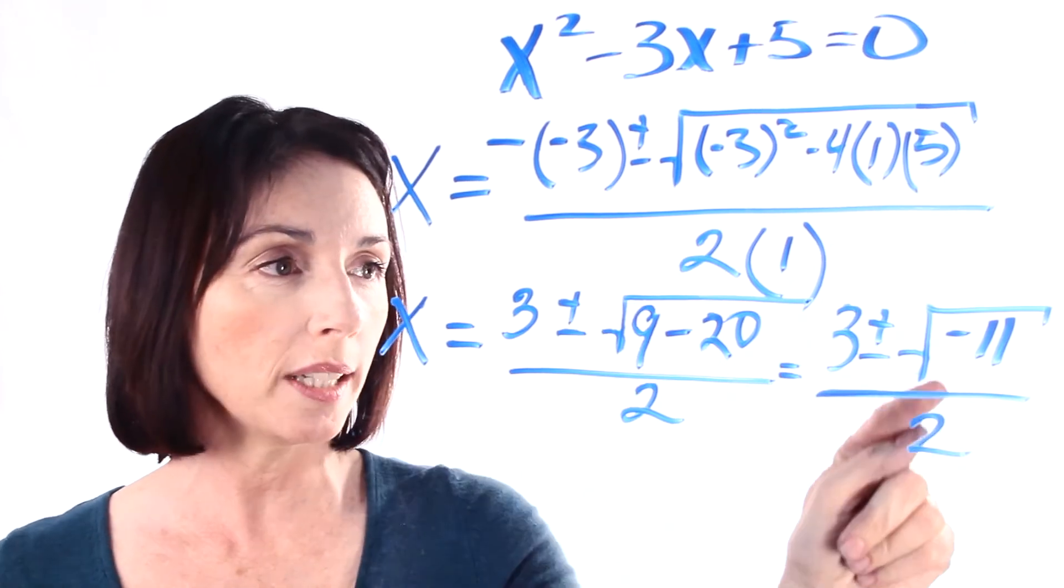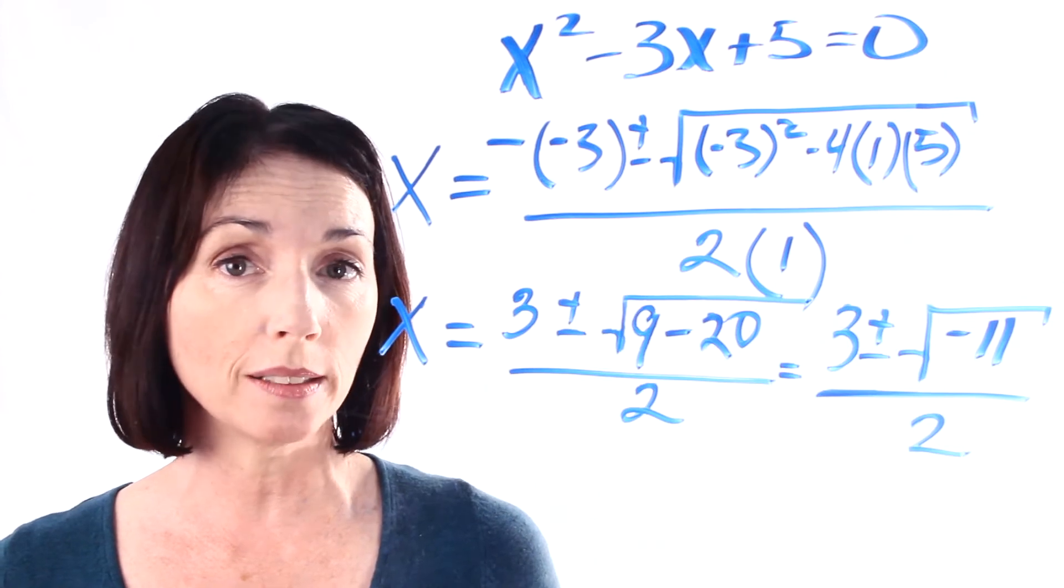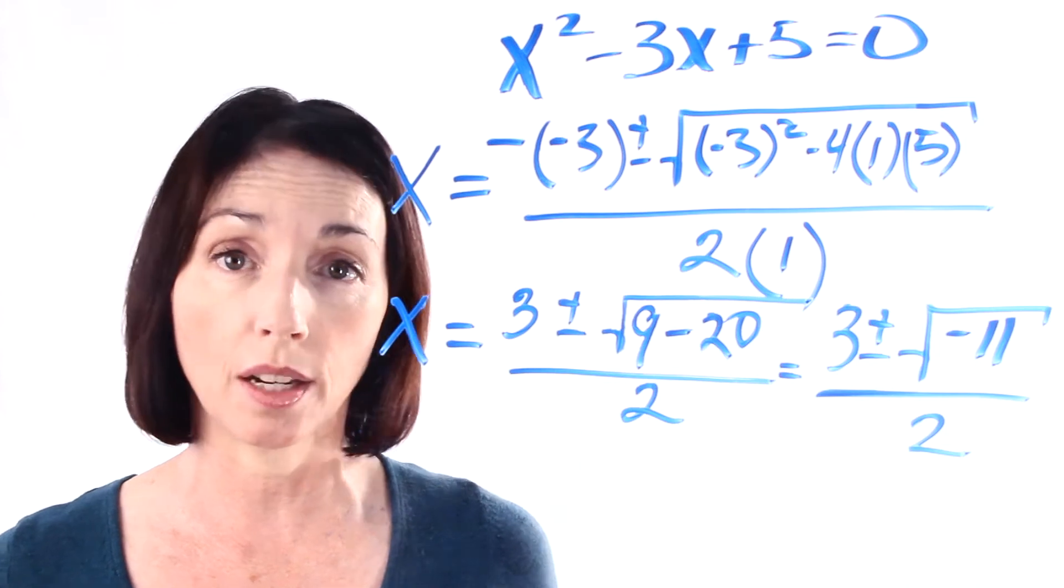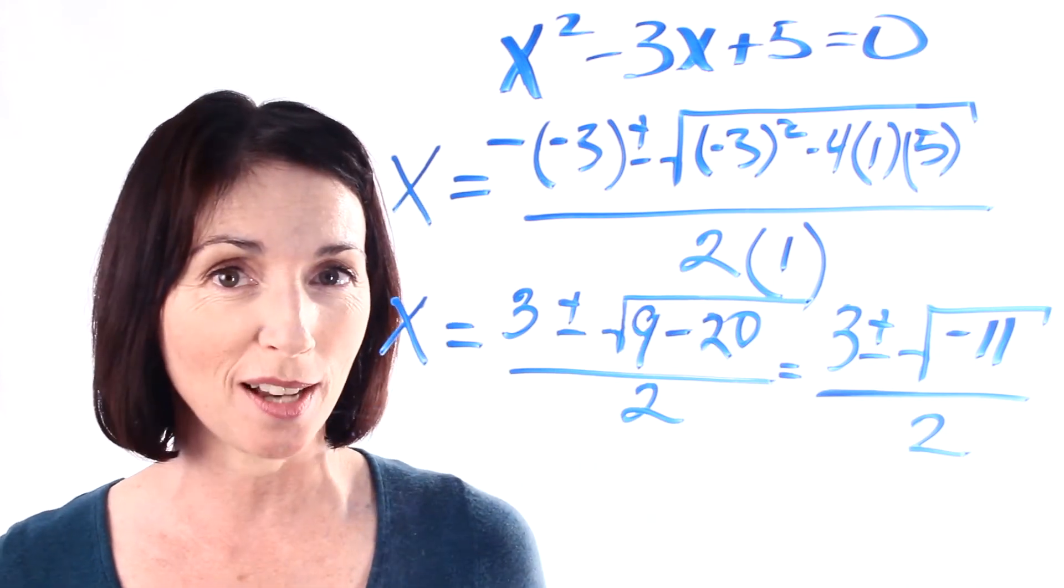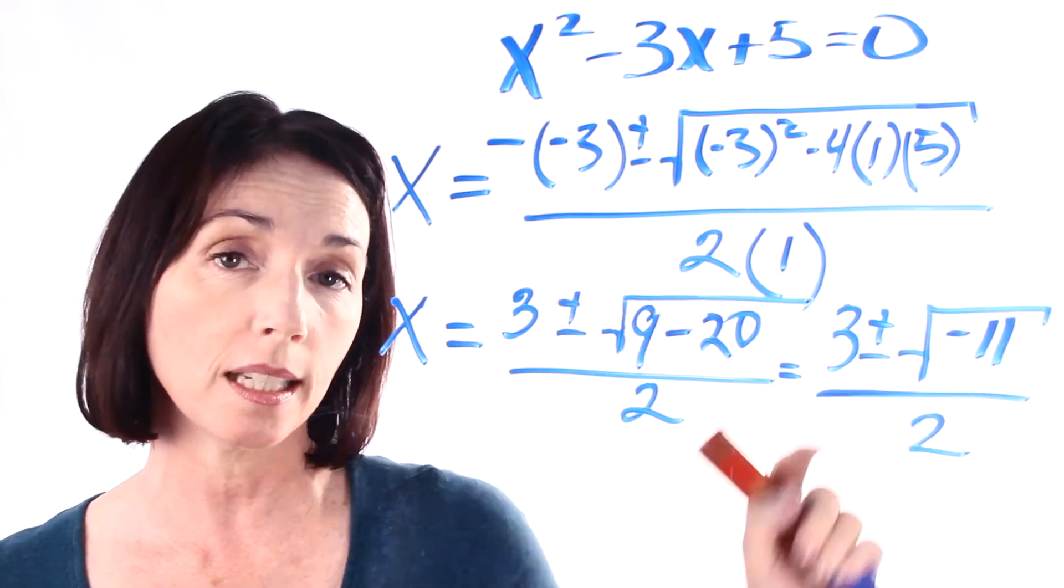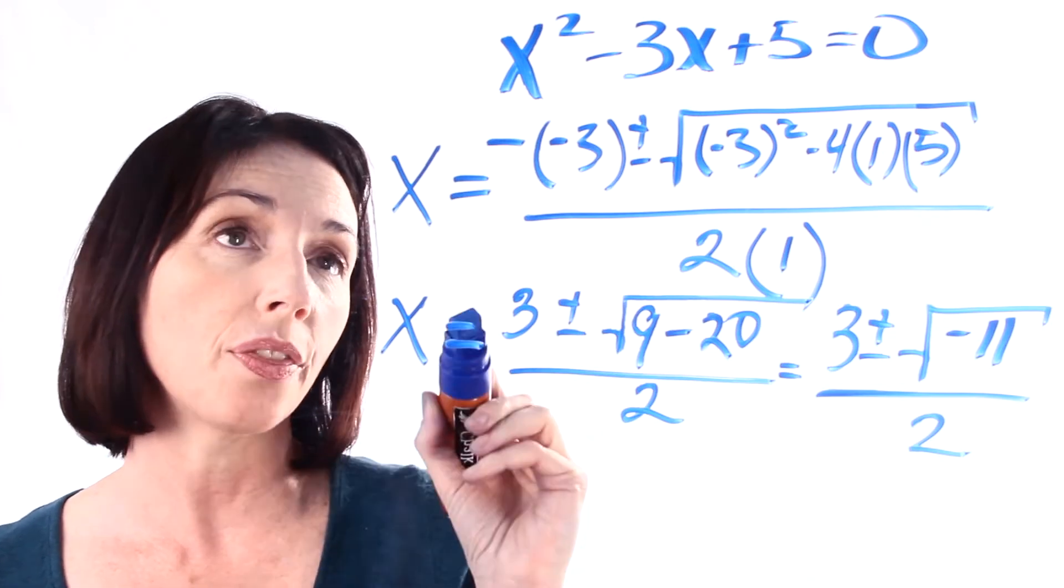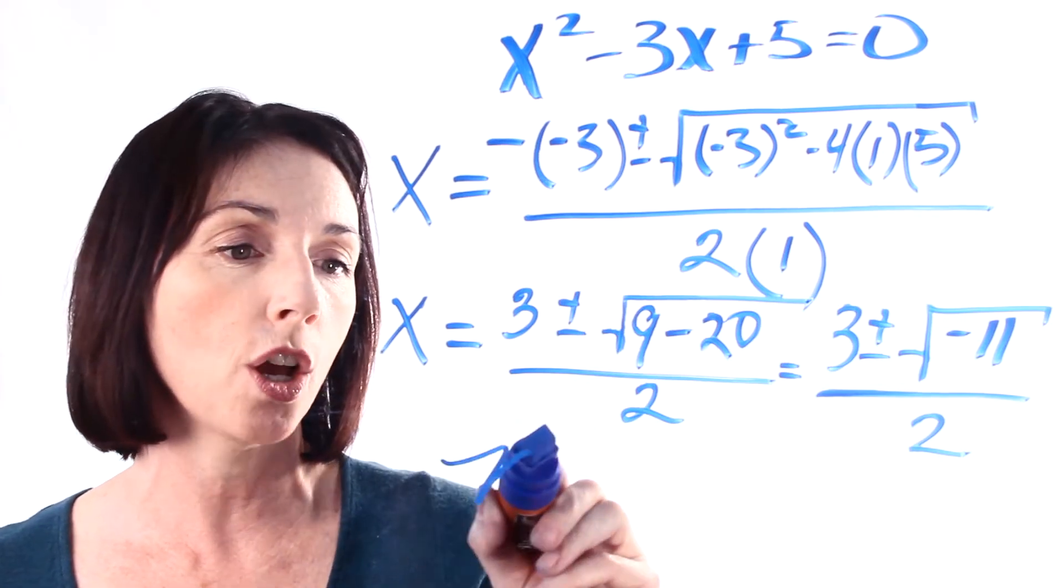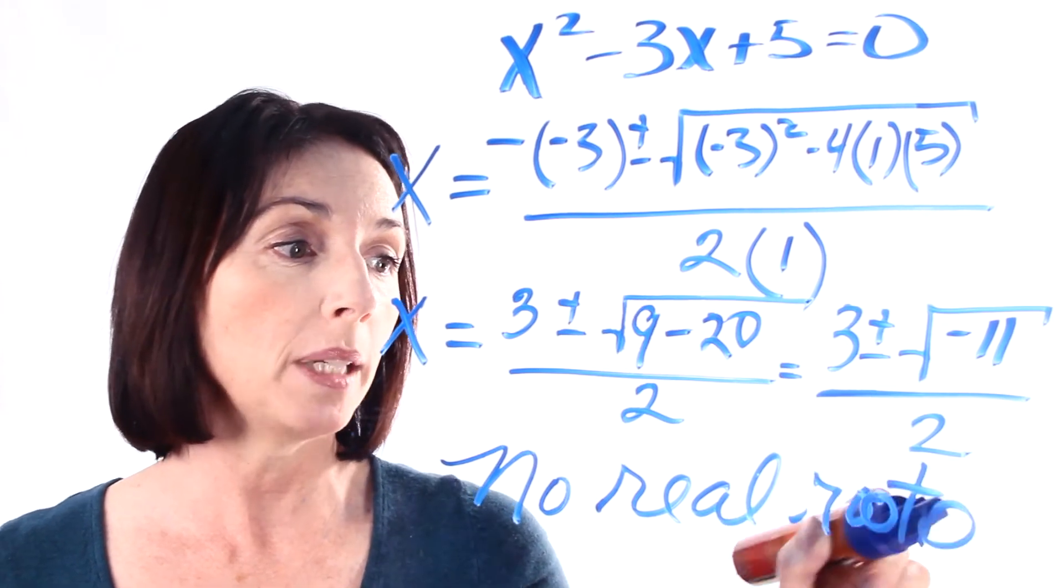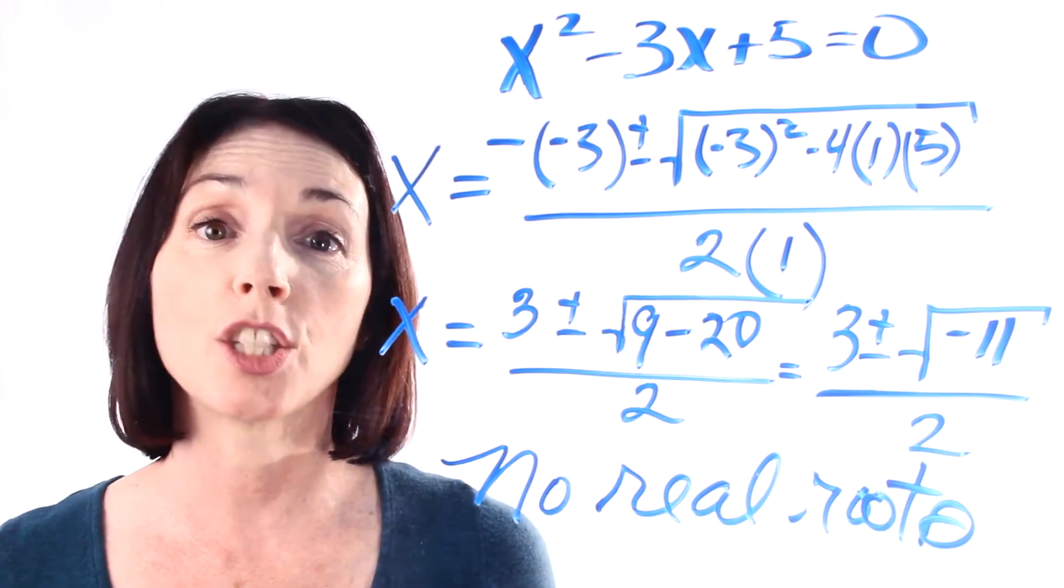Now if you'll notice we're trying to take the square root of a negative number, and if we're working in the set of real numbers we can't do that. You can do that in a larger set of numbers called the set of complex numbers, but that's a different topic. So in this case, if we're working in the set of real numbers, since we can't take the square root of a negative number, that means that our answer is that this quadratic equation has no real roots. And what that means is that in the set of real numbers, this quadratic equation has no solutions.